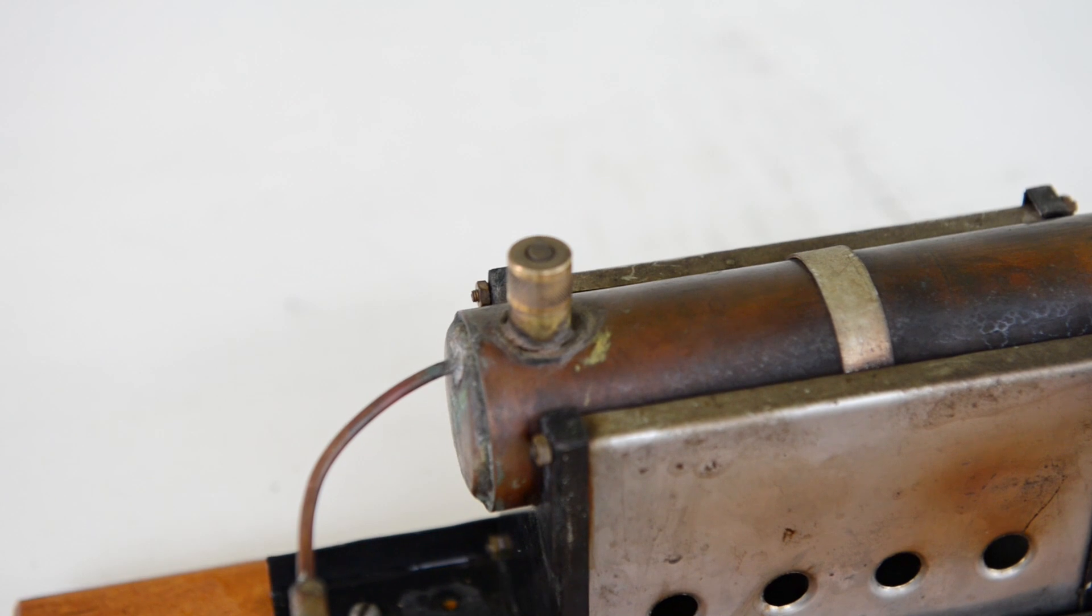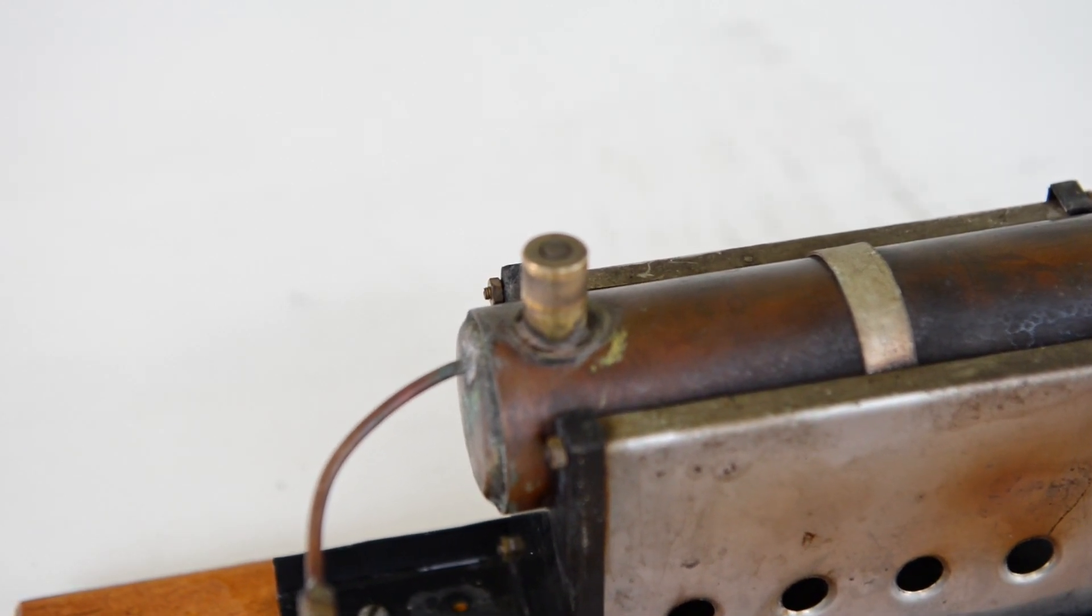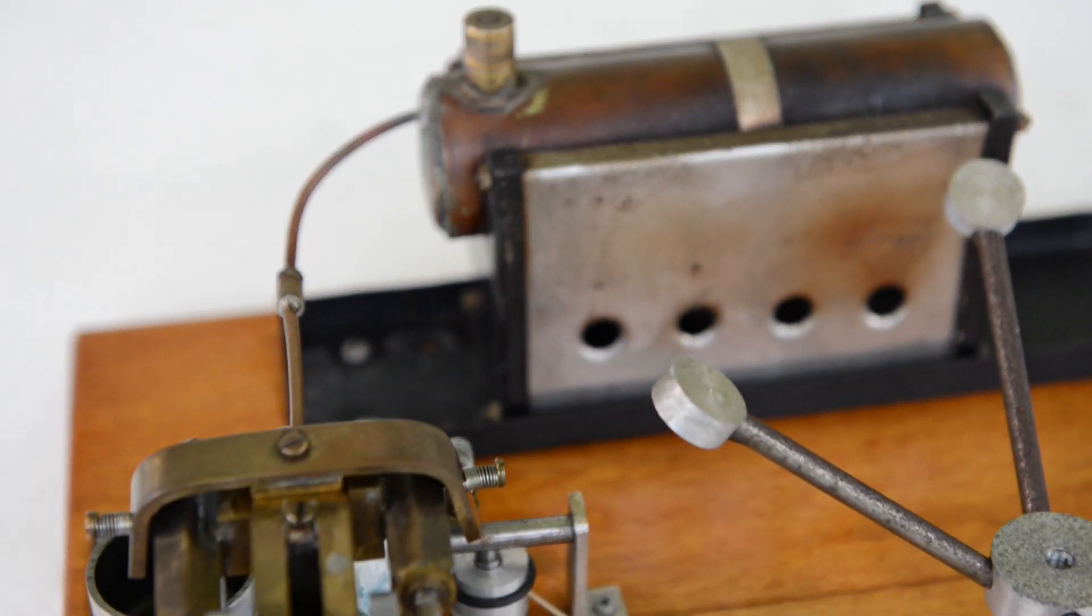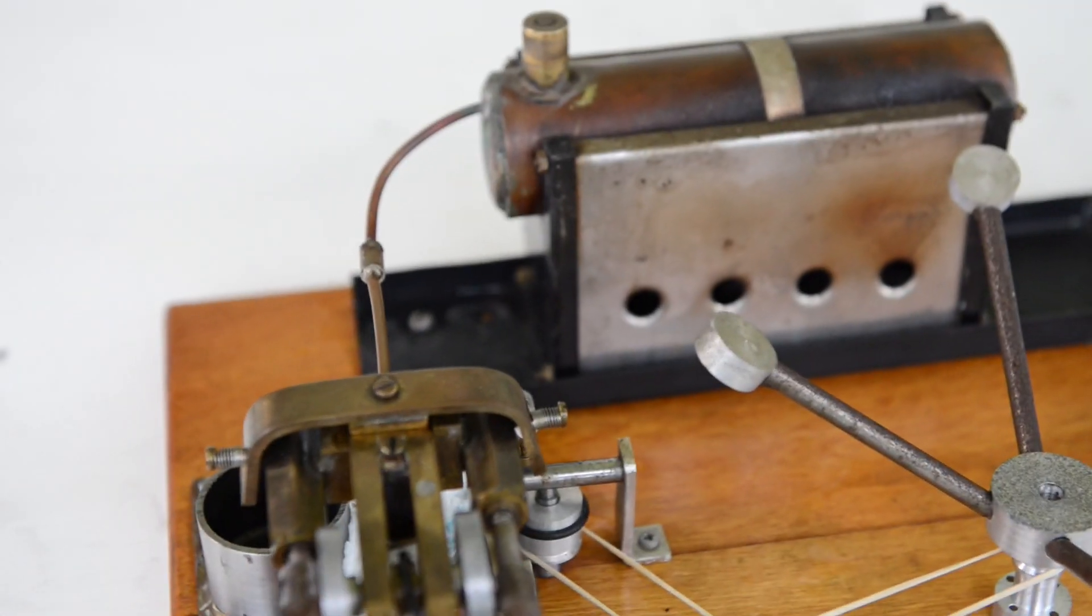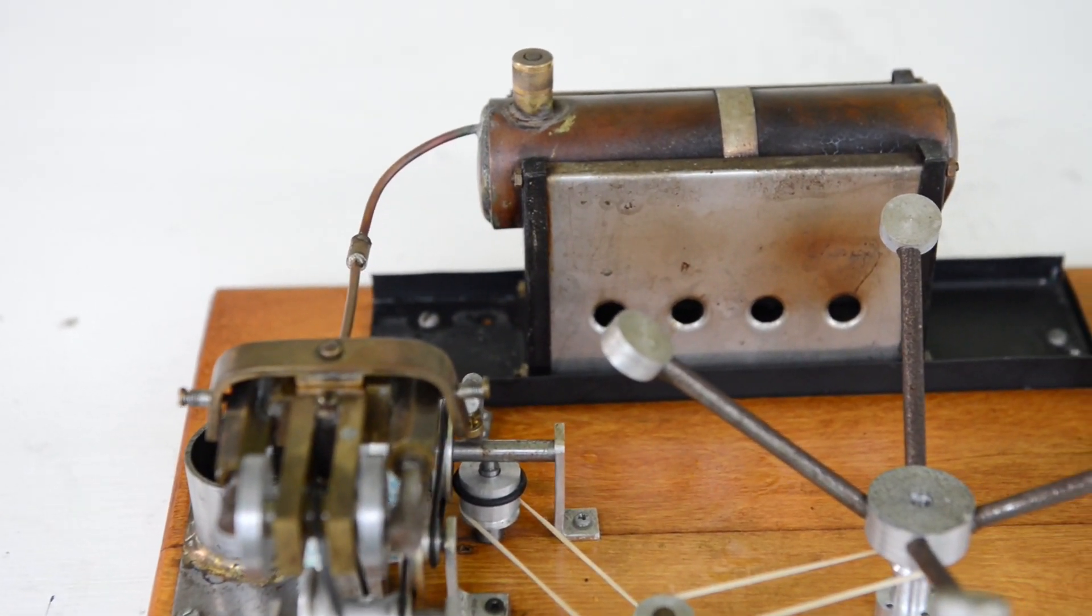After some time, the boiler got up to the right temperature and the engine looked like it was about to start. But all of a sudden, the safety release valve went off and all the steam was released. So this indicates that there is a block somewhere in the pipe leading to the engine.